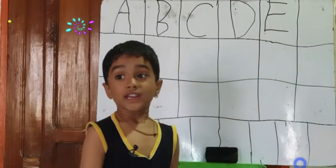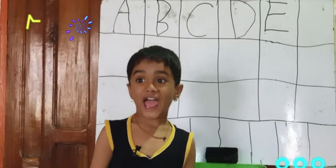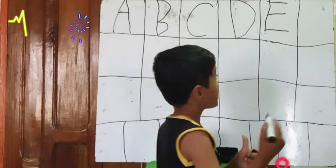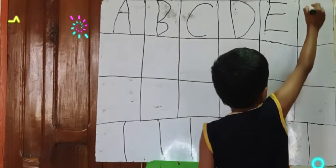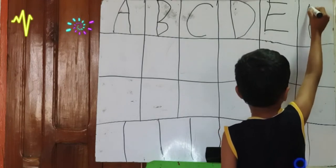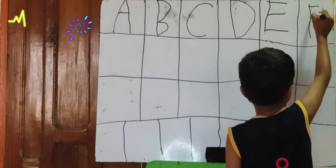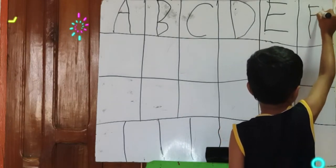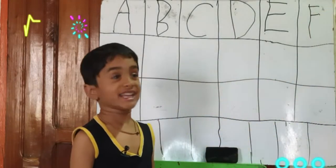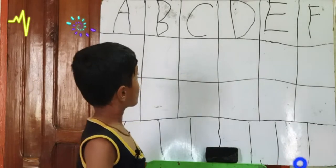Now we are going to learn F. One standing line, one sleeping line, one sleeping line. That is F.